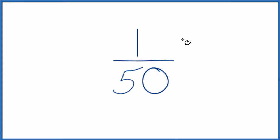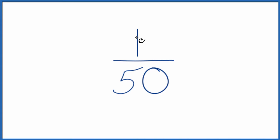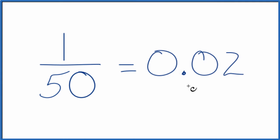Let's convert the fraction 1/50 to a decimal. There are two ways we could do this. We could put 1 over 50 in our calculator, divide 1 by 50, and we end up with 0.02. So that's one way to do it.